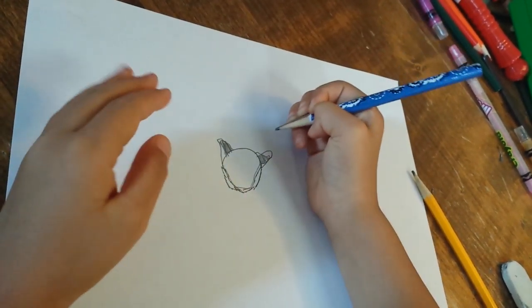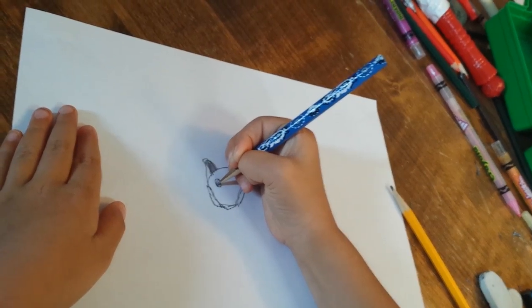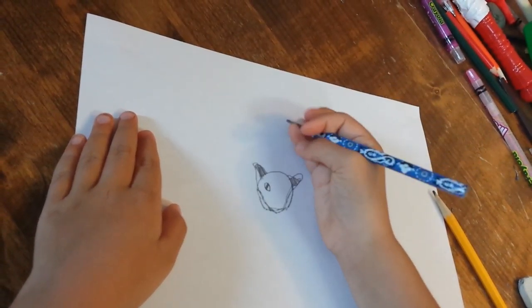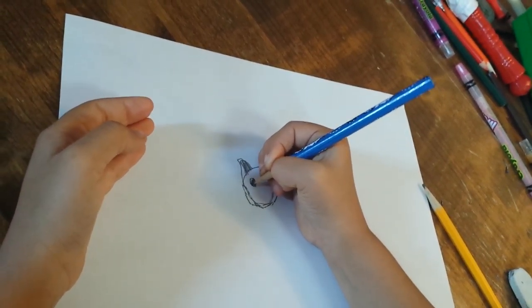Then you do a little, another one and color it in. That would be part of the stripe on the ear. Right now it kind of looks like a dog, but it will look more like a tiger at the end.